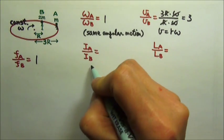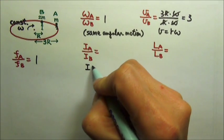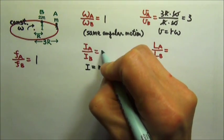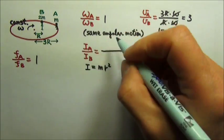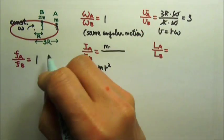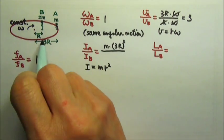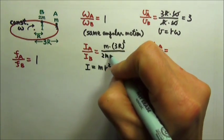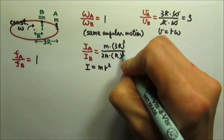The rotational inertia - we can treat the two people like point masses. For point mass, I is mr squared. So the rotational inertia for person A is: the mass is m, the radius is 3r squared. And then for person B, the mass is 2m, the radius is r squared.